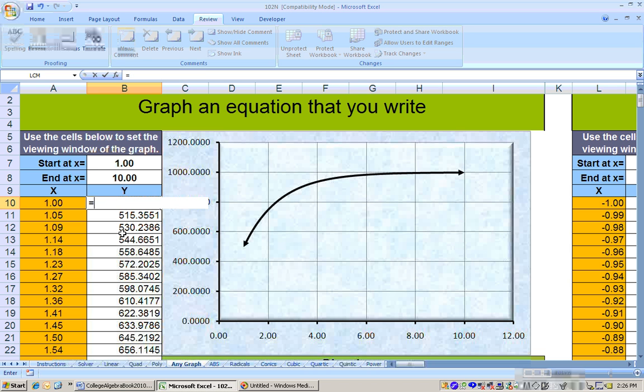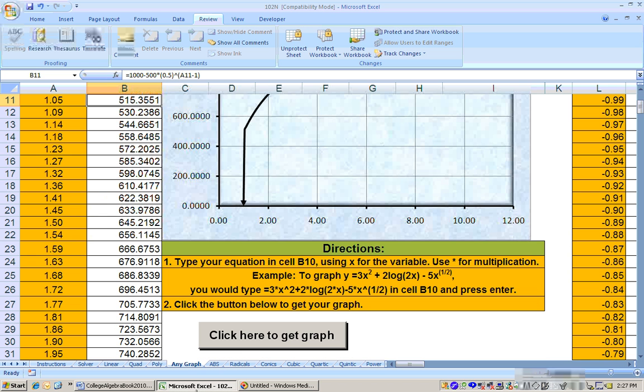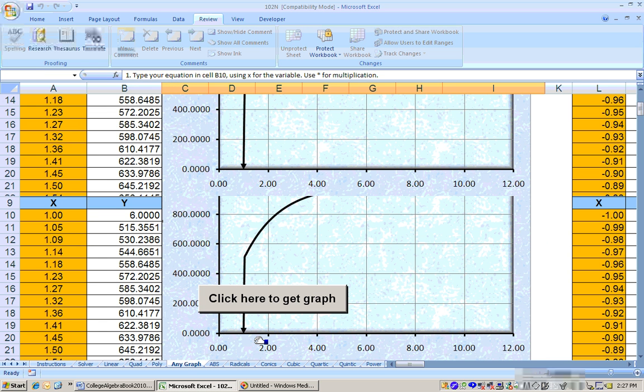So let's go ahead and graph the first equation, which is equals 3 times x raised to the parentheses 1 third power, plus the absolute value, that would be abs of x, and then plus 2. Okay, there that equation is in. Let's go ahead and click here to get the graph.